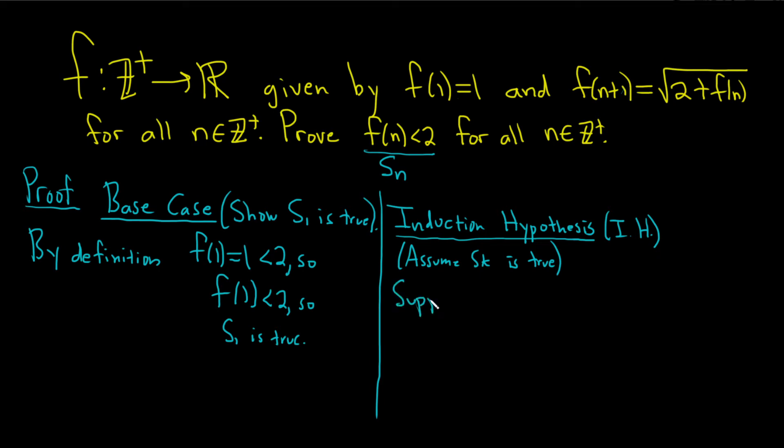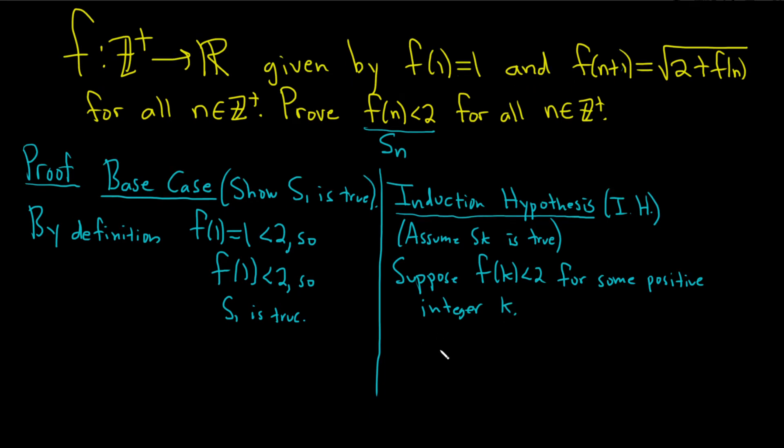So let's do that. Suppose that f(k) is less than 2. And it's not just for all k, it's for some positive integer k. We don't know what it is, just some positive integer k.